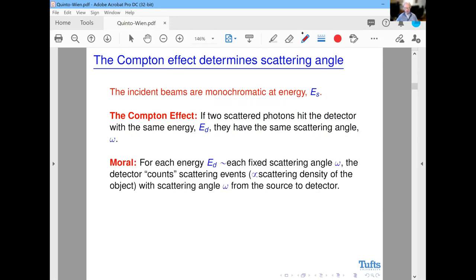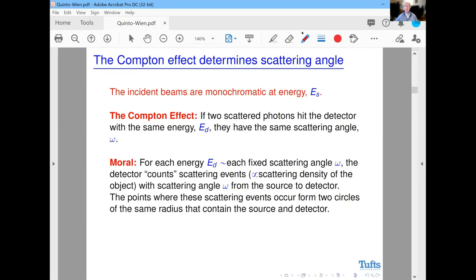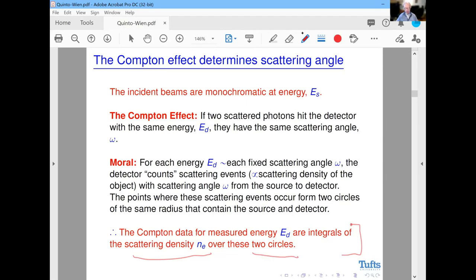The detector measures both photon count and energy of the photons. And for each fixed energy, every photon that hits this has to have scattered with an angle of omega, the same angle. Therefore, for each energy, that is each fixed scattering angle, the detector counts the scattering events, which are proportional to the scattering density of the object with this fixed scattering angle. The points where these scattering events occur form two circles of the same radius that contain the source and the detector.